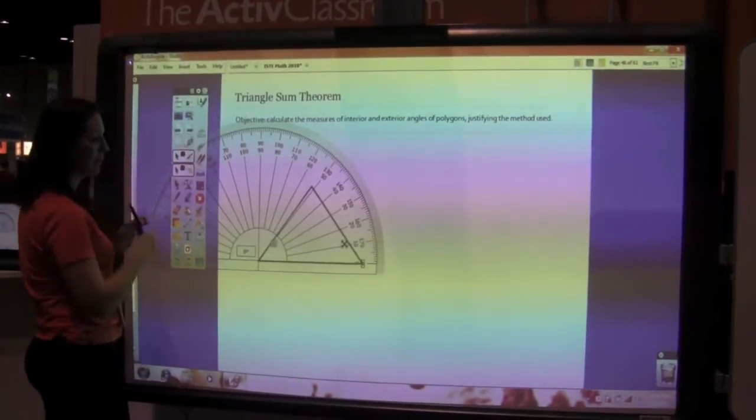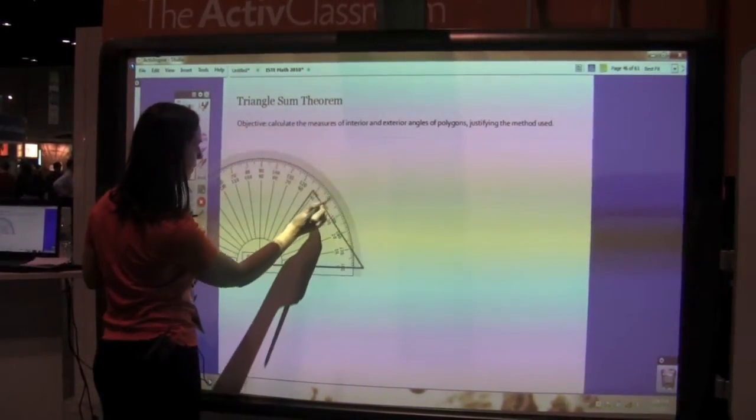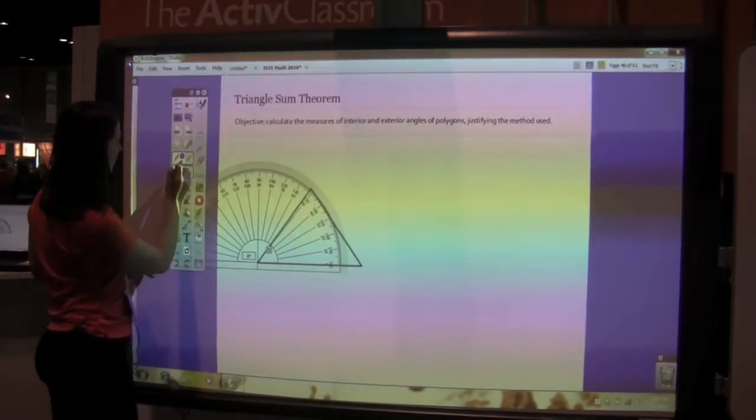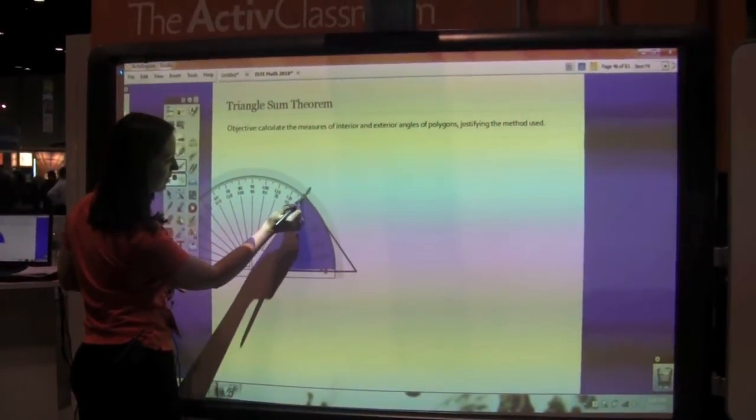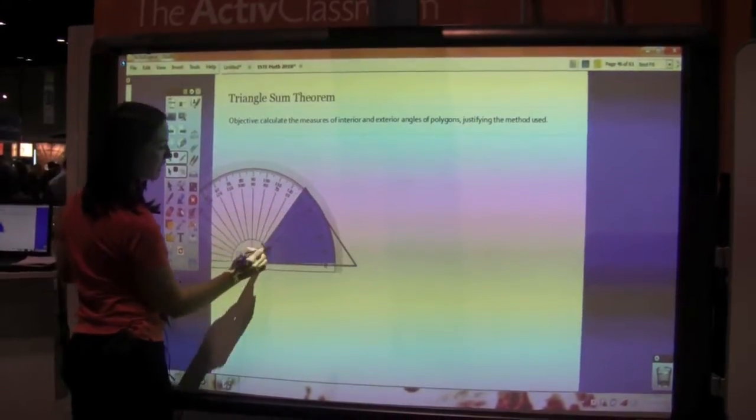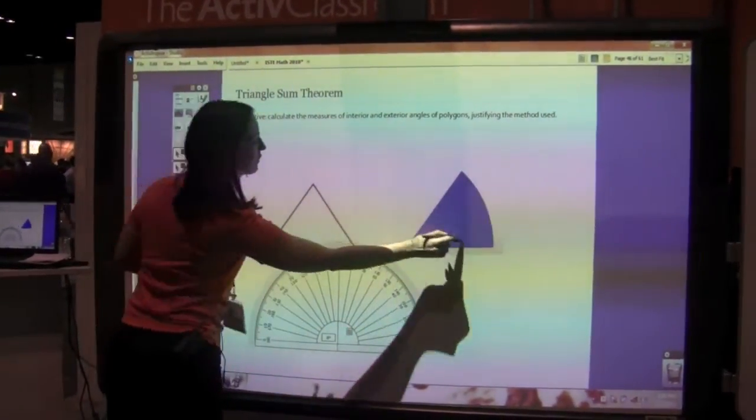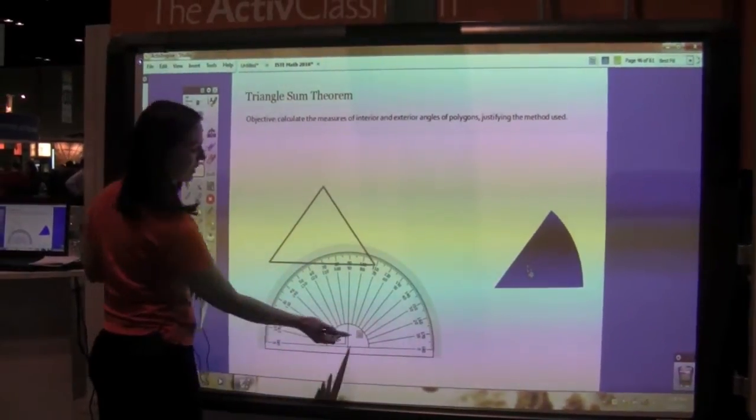And I'm going to pull out my pen. It's a little bit smaller here. And we're going to go ahead and make a little piece of the triangle. So that's my measure of the first angle in my triangle.